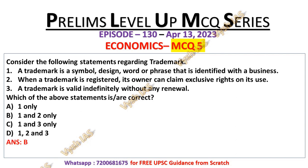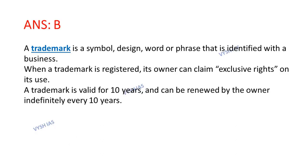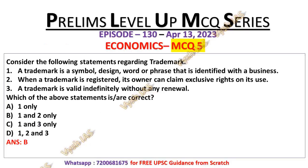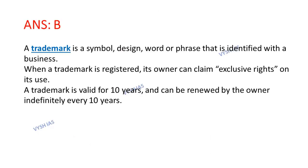The correct answer is option B, which means statements 1 and 2 are correct regarding trademark. A trademark is a symbol, design, word or phrase that is identified with a business, and when a trademark is registered its owner can claim exclusive right on its use. Statement 3 is incorrect: a trademark is valid for 10 years, not indefinitely without renewal. A trademark is valid for 10 years and can be renewed by the owner indefinitely every 10 years.